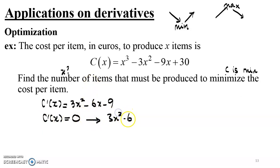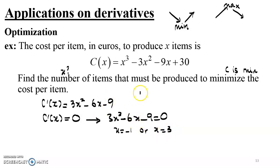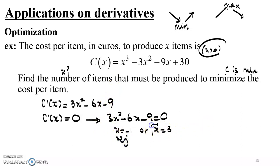Setting 3x squared minus 6x minus 9 equal to zero and solving that quadratic polynomial gives X equals negative 1 or X equals 3. However, since X represents the number of items being produced, X must be positive, so X equals negative 1 is rejected. This leaves X equals 3 as the only root of the first derivative in this context.